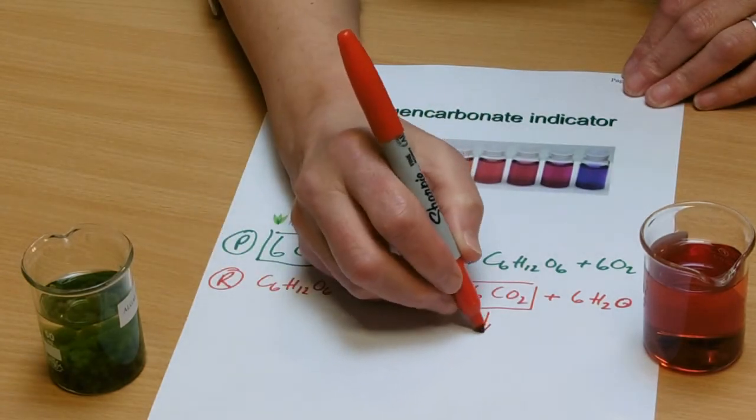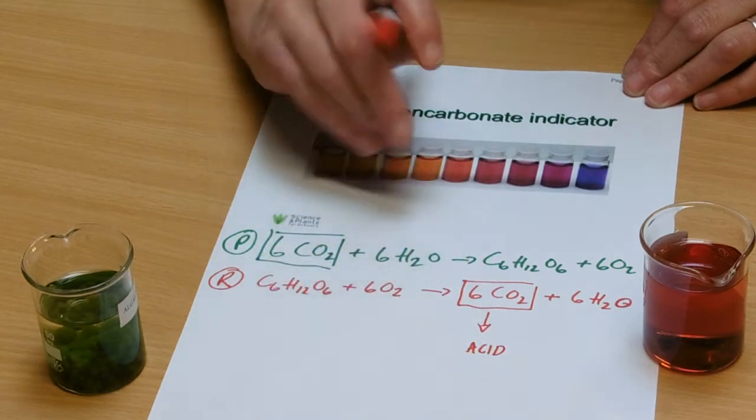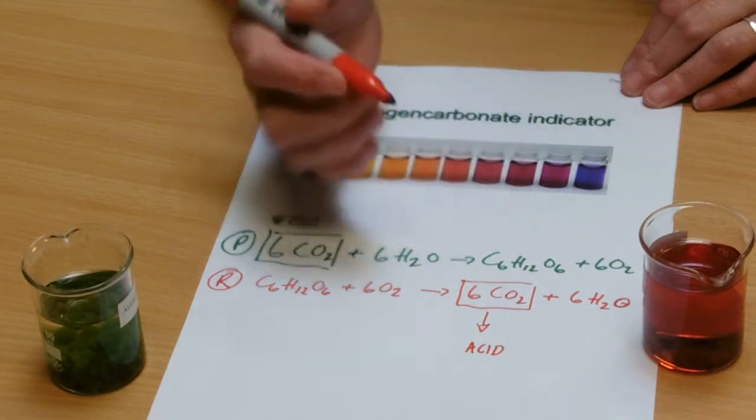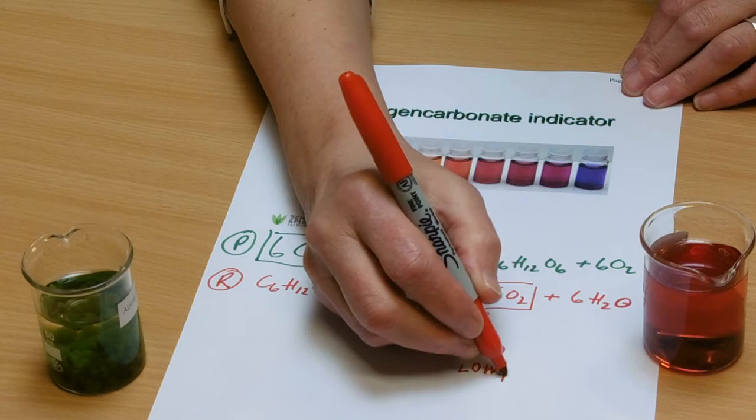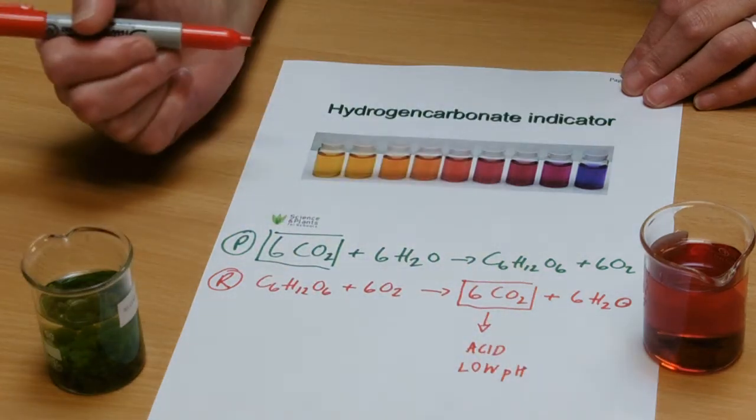So what do we know about carbon dioxide? From your working on animal transport, you will know that carbon dioxide is an acidic thing. So it's going to make a low pH, which is going to change the color of the indicator.